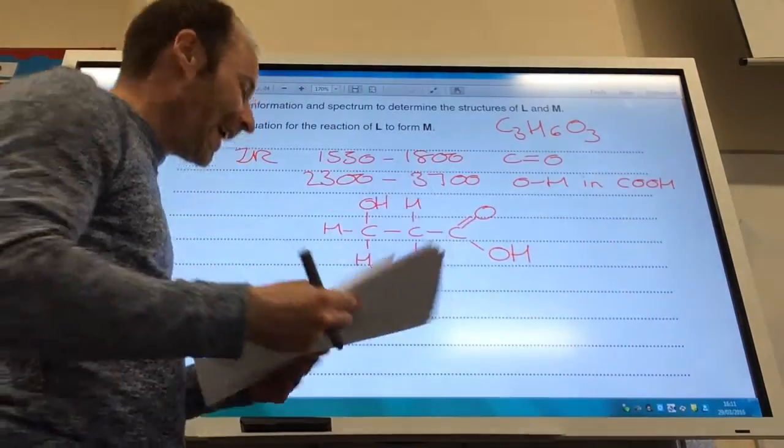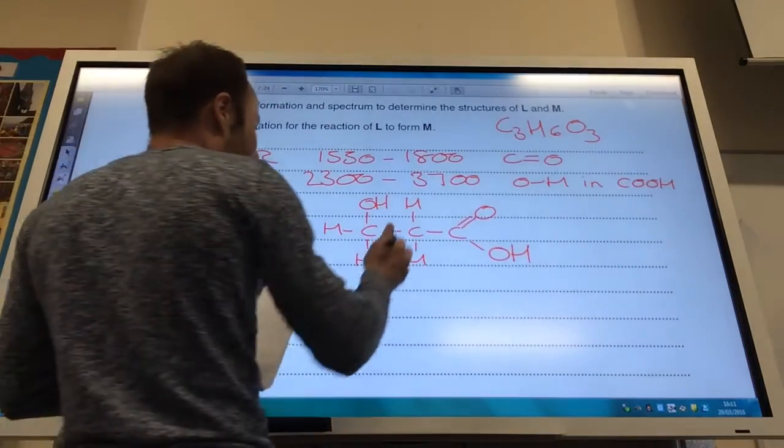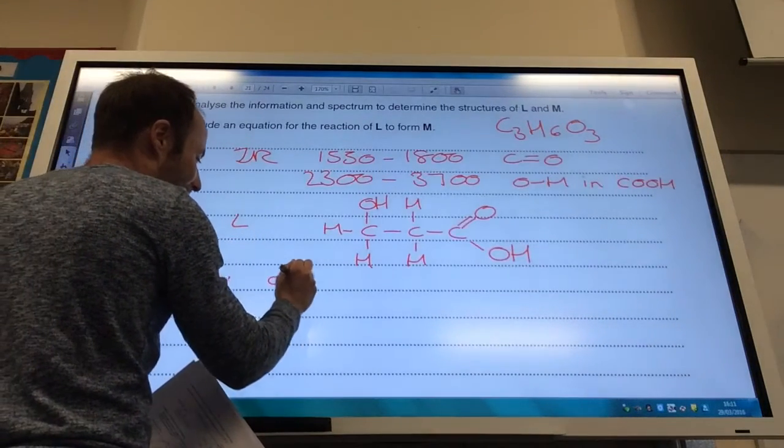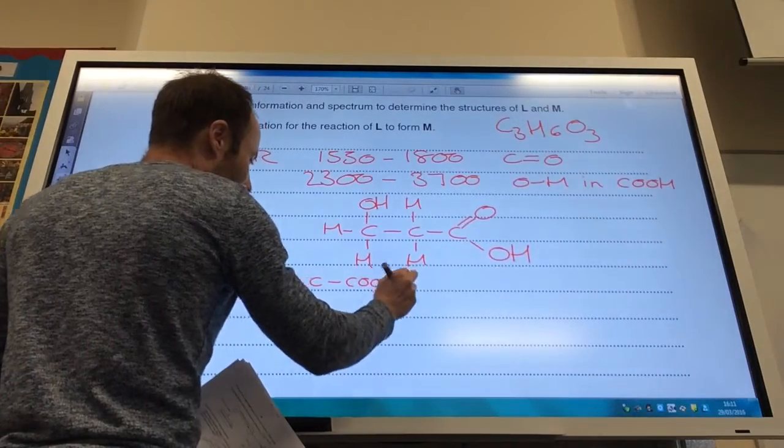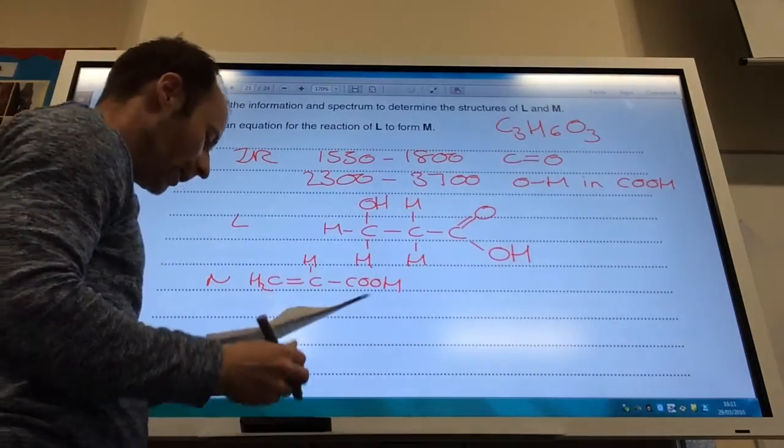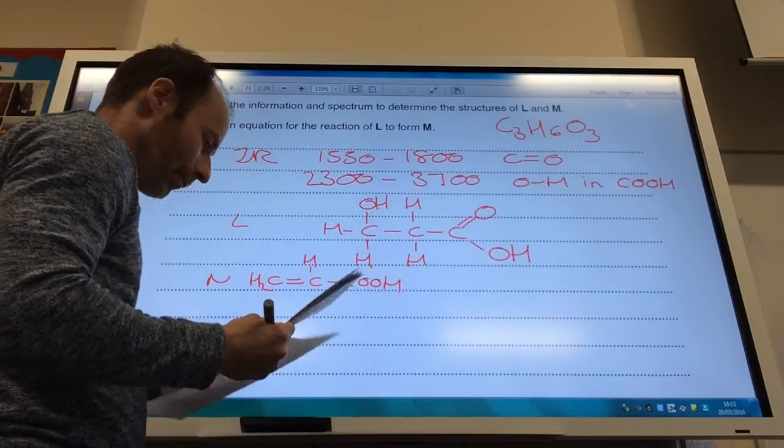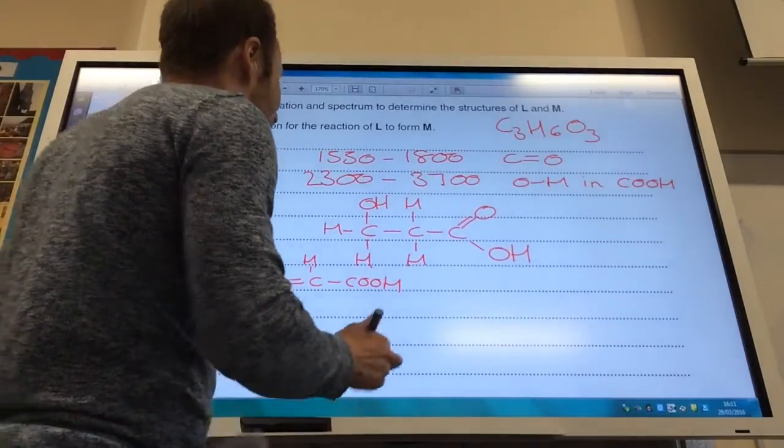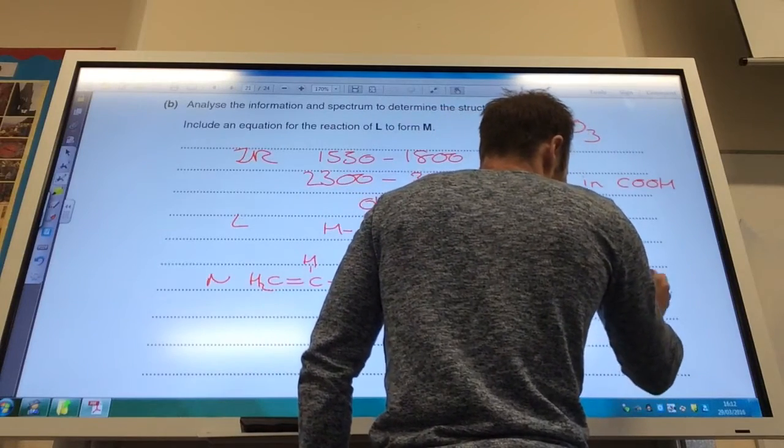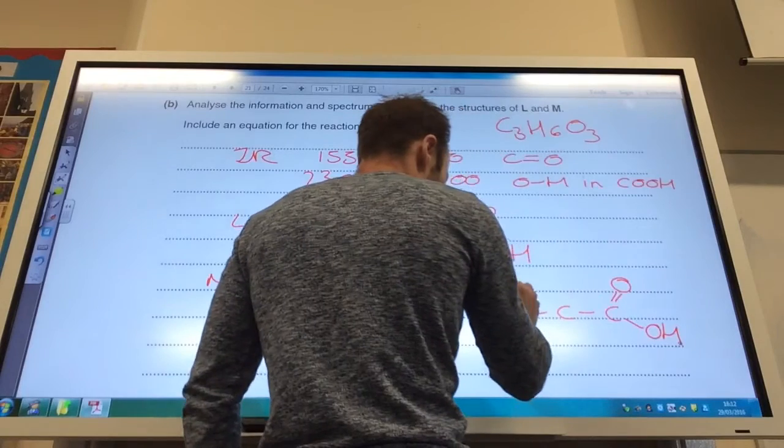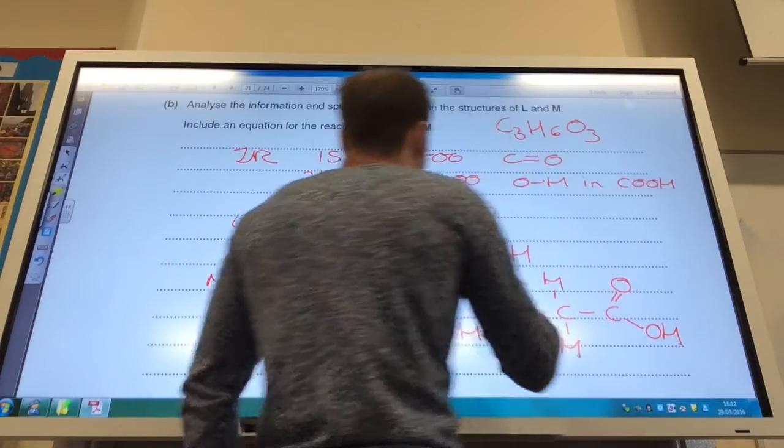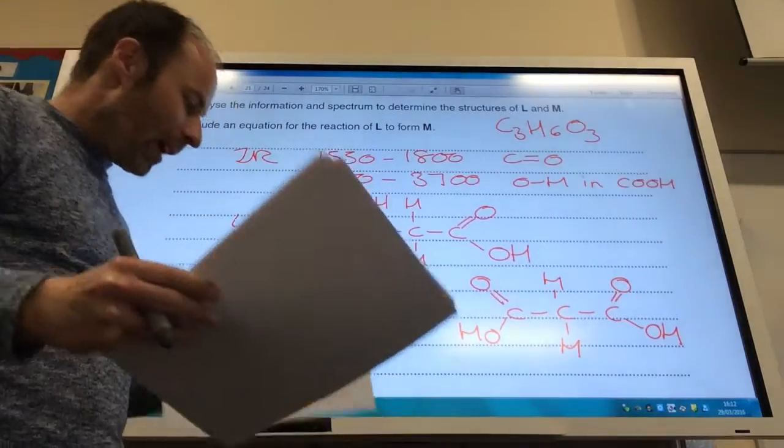When I go to get N, N is the elimination of H2O, which will be that. So that is L. N is going to have a double bond here, like so. And I've eliminated OH. And M is going to be my dicarboxylic acid, so I've oxidized this one here. I'm going to have two carboxylic acid groups. I've oxidized that to give me that.